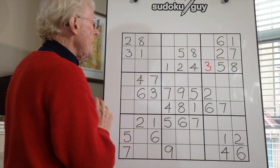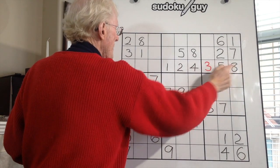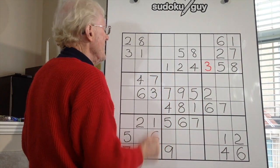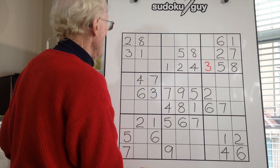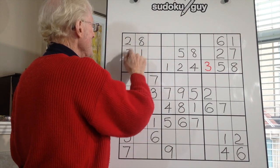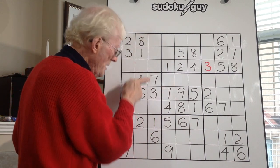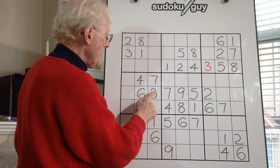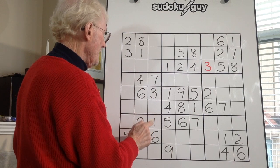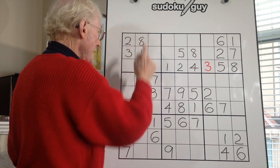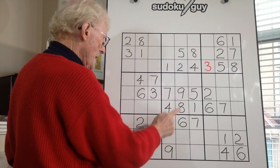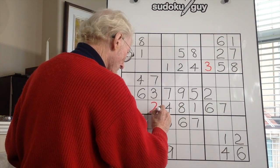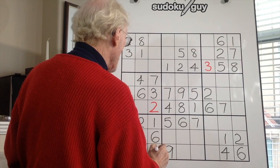Now that you've got all the numbers there, let's look at the numbers we need down here. We need one, two, three, and eight in this section from here down to here. In this column we've already got a one and a three, so what's left — the two and the eight — have to be in here somewhere. There's an eight there, so this has to be a two, and therefore this will become an eight.